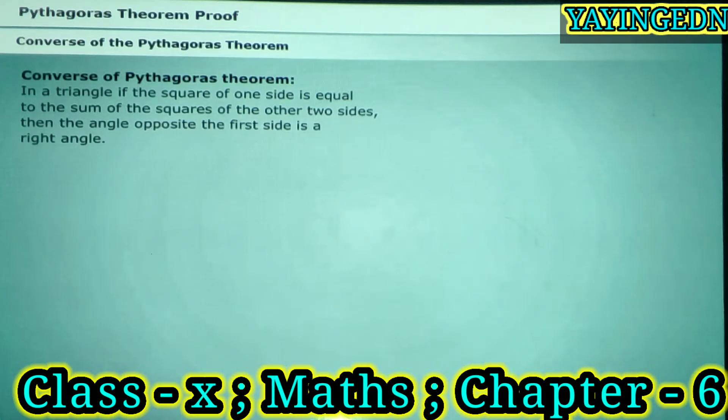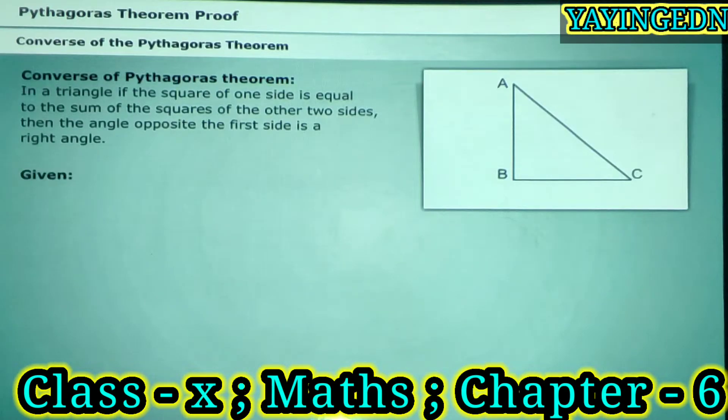Let us now prove this. See the figure on your screen. We are given triangle ABC, such that AC squared is equal to AB squared plus BC squared.